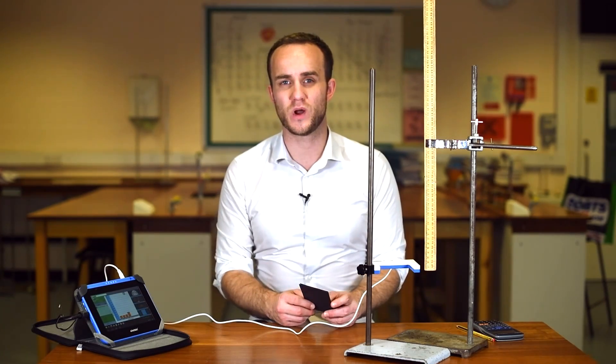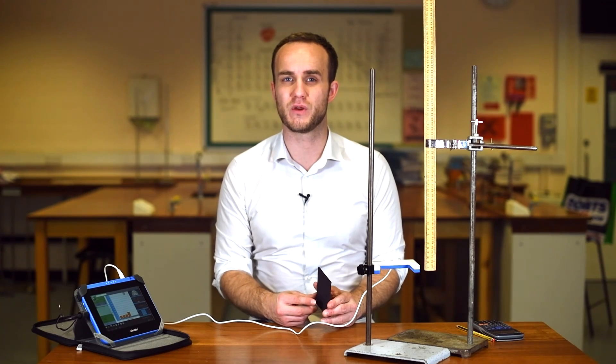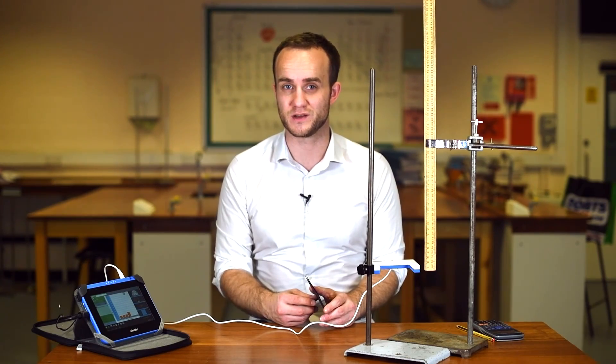Weighing down the card as well means that it's less likely to fall through at an angle. If it did that, that means that the length of 10 centimeters might not be correct for the calculation.